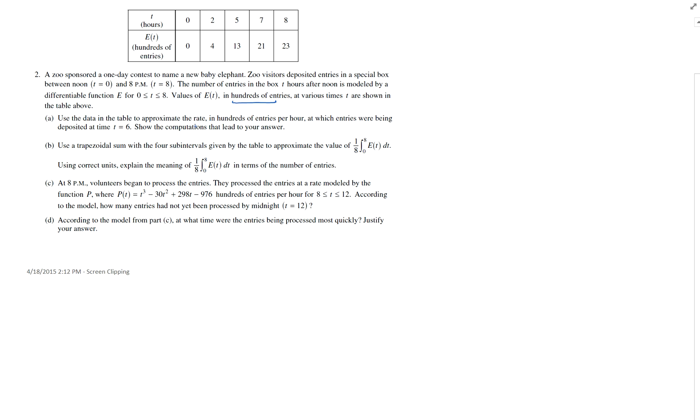Using the data, approximate the rate of entries that were being deposited at time t equals 6. So what is the rate? That's e prime of 6. So we want to estimate, or approximate, e prime of 6.